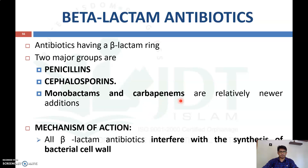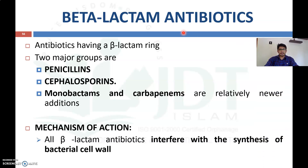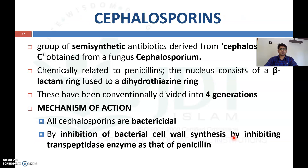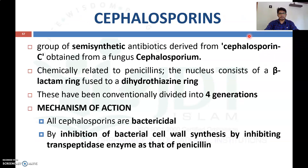Beta-lactam antibiotics are antibiotics having a beta-lactam ring, as in penicillin. The two major groups are penicillin and cephalosporin, along with monobactam and carbapenem, which are relatively newer beta-lactam antibiotics. Their mechanism of action involves interfering with bacterial cell wall synthesis, thereby inhibiting bacterial growth.